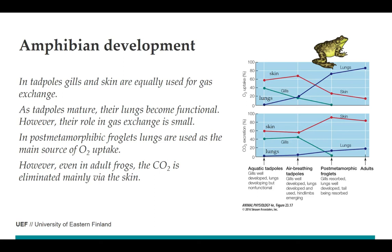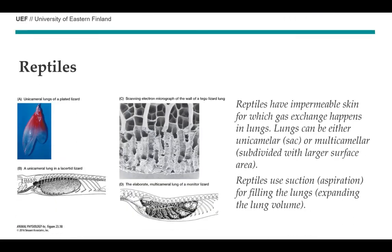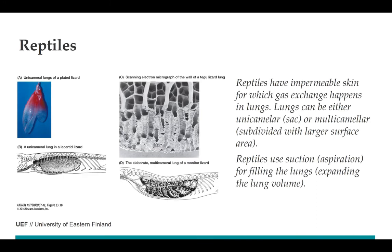Frog respiration is not highly efficient, but this doesn't matter as long as the skin remains moist. Moving to reptiles: they have impermeable skin, so gas exchange happens entirely in the lungs. Reptile lungs can be unicameral — like amphibian sacs — or multicameral, subdivided with larger surface area. Crucially, reptiles no longer use the same muscles as fish and amphibians; instead they use aspiration, expanding lung volume to draw air in, using similar muscles to those humans use.